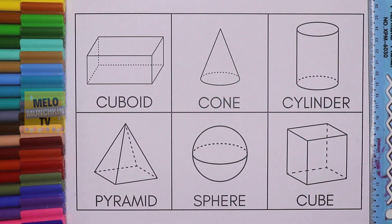Hello kids! Today we'll learn 3D geometrical shapes. There are only six basic 3D geometrical shapes on the sheet. We'll color them and learn the names of each. So without much ado, let's get started.